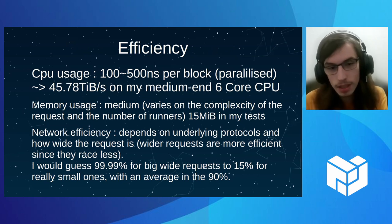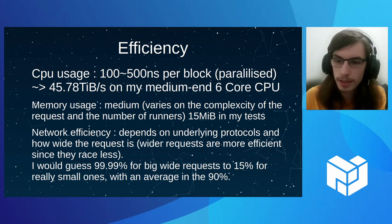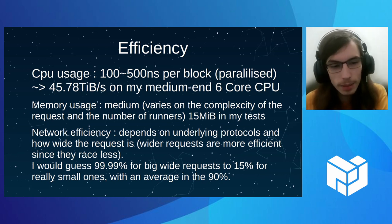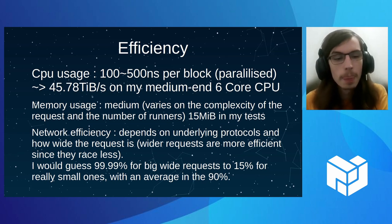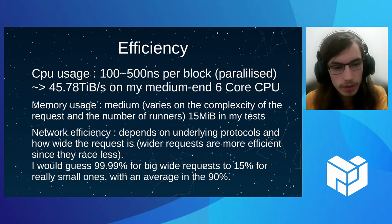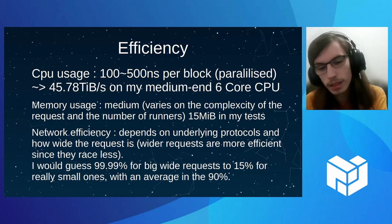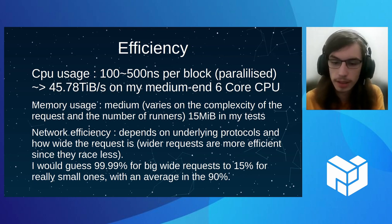The CPU usage is around 100 to 500 nanoseconds per block, counting only RapiD and not the underlying protocol, which is extremely good. In theory, you should be able to do 45 TB per second — obviously you don't do that, but RapiD is so fast that all you care about optimizing is your actual underlying data transfer. Memory usage depends on the graph size because we need to keep the tree. Network efficiency is still rather good — the wider the graph, the better, because we don't have as many cases where two people download the same block.